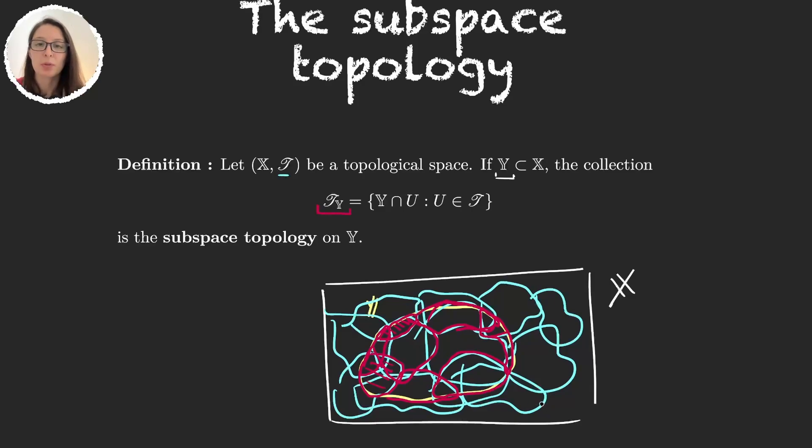There are probably a few more that I'm missing, but you get the idea. The idea is grab every element you have in your original topology and intersect it with your subset. Now you have a new topology, and that topology will make Y a subspace of X.